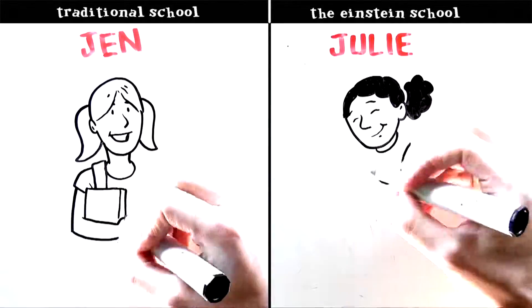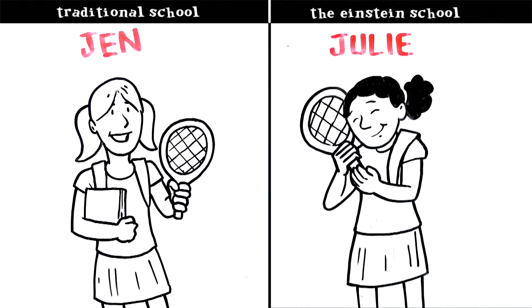Jen and Julie are both tennis players, and they take it very seriously, but they're still in high school, so they have to fit in both sports and schoolwork into their day.